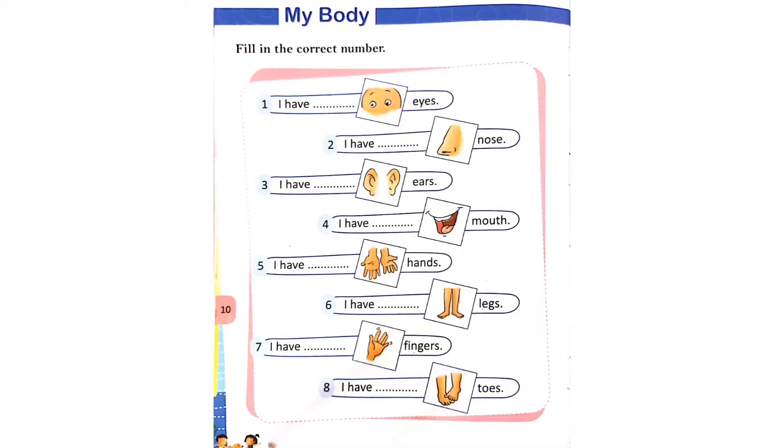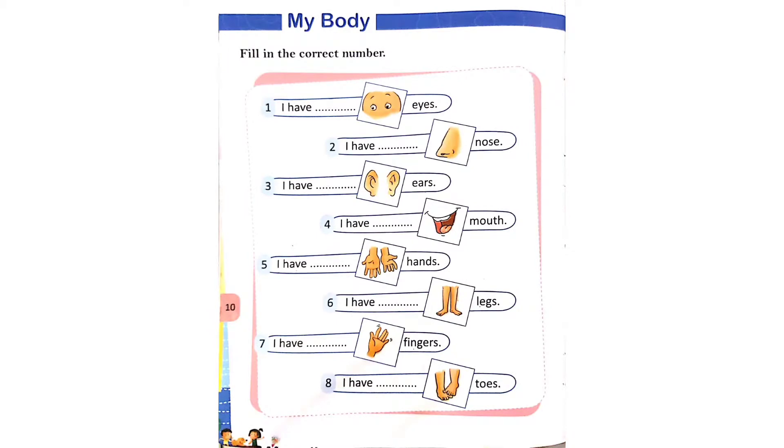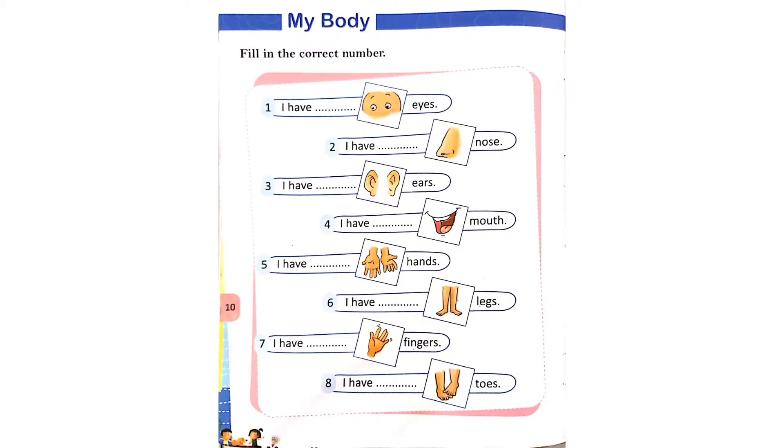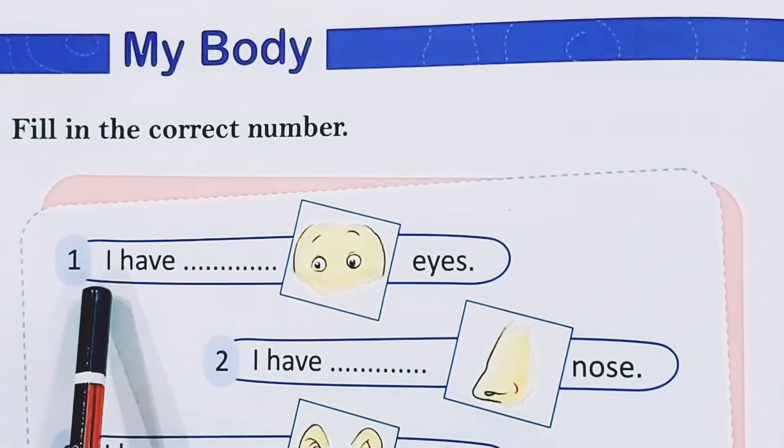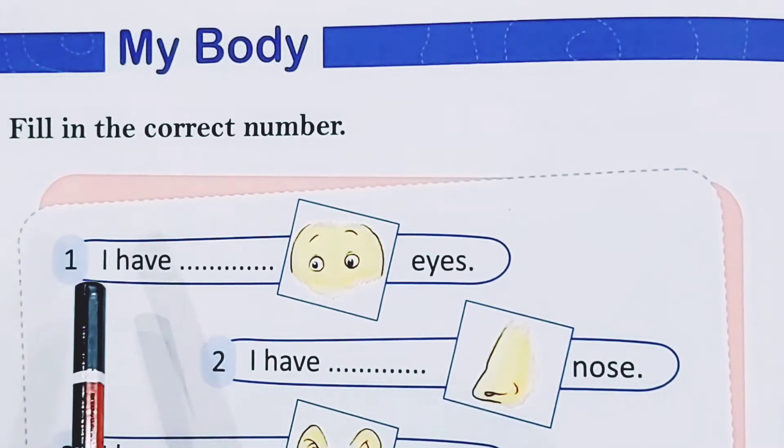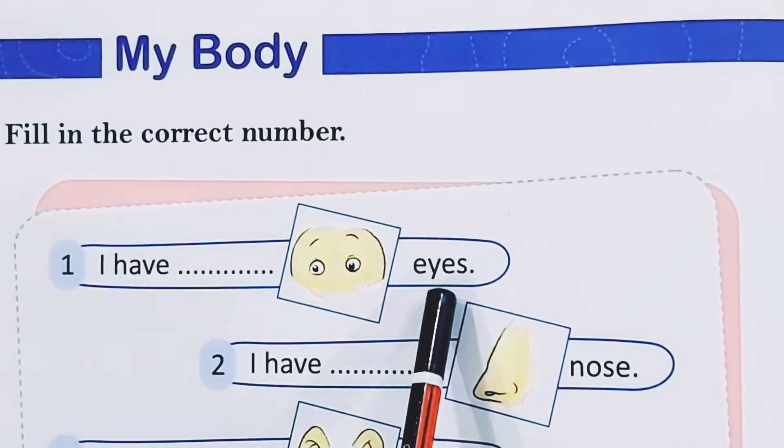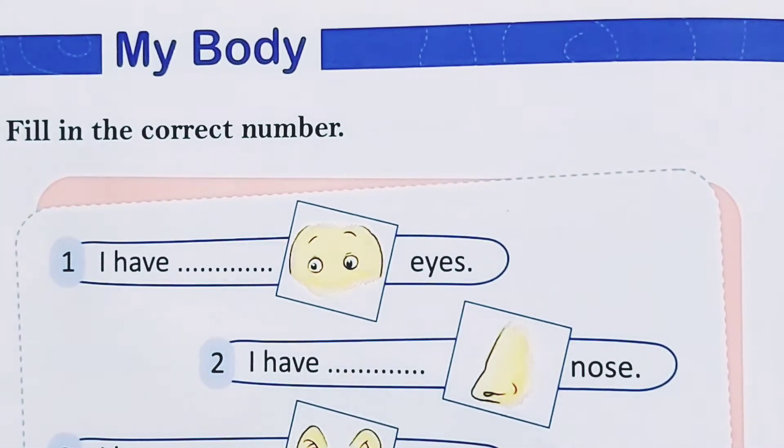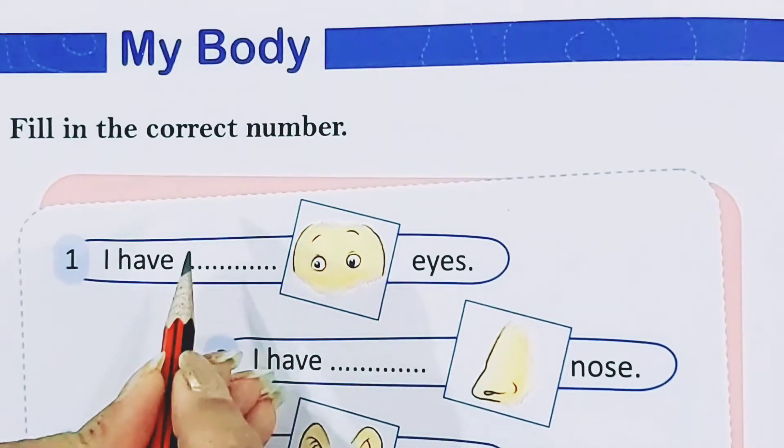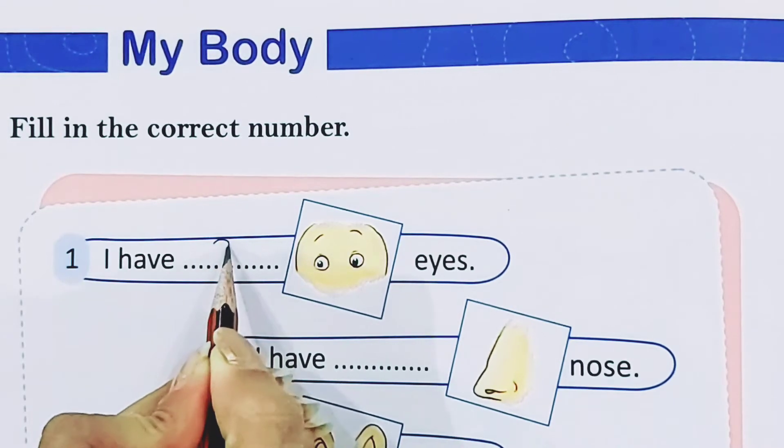On this page, we will write the correct number of body parts we have. Let us start, children. Now, the first is, I have dash eyes. Children, tell me, how many eyes do we have? Two eyes. So, we will write number 2.